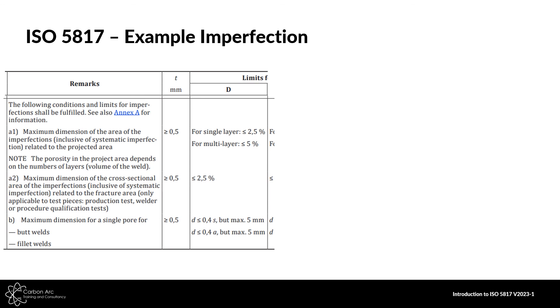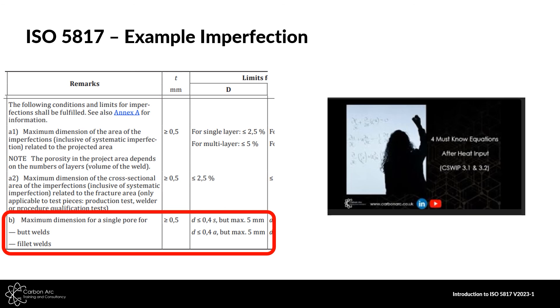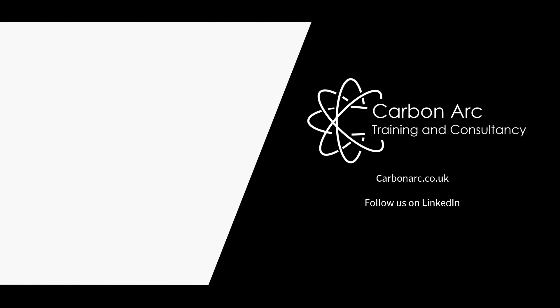So really, what you need to do is go through A1 and A2 — everything applicable must pass — and then you can accept the weld. D is equal to or greater than 0.4S to a maximum of 5, which is covered in the link below. That's a very quick review of 5817. It's a really good standard — one big table giving acceptance criteria over three quality ranges: D, C, and B. Find your defect type, look at the remarks, apply the calculation, and accept or reject as needed. Good luck with your studies.